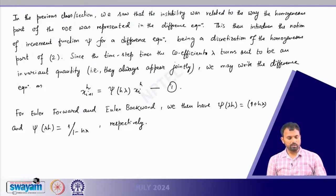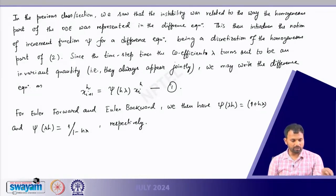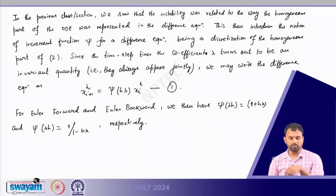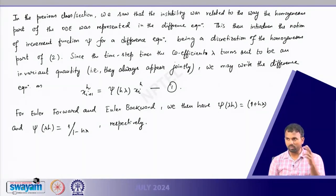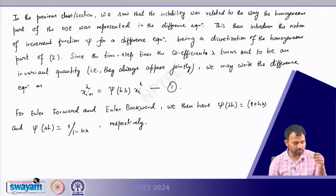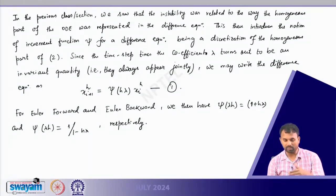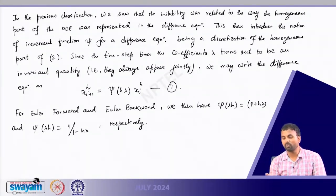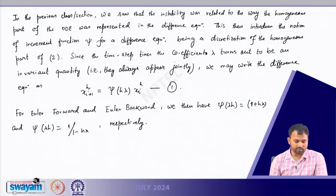Similarly, we can go back to Euler backward and try to plot the graph for h = 0.05 and h = 0.00625 as we had in the previous class. From the table we can compare the values of the function ψ based on whether we are selecting the forward or backward scheme.